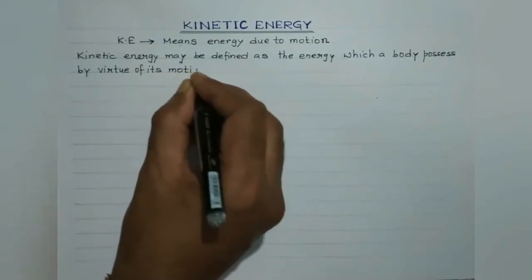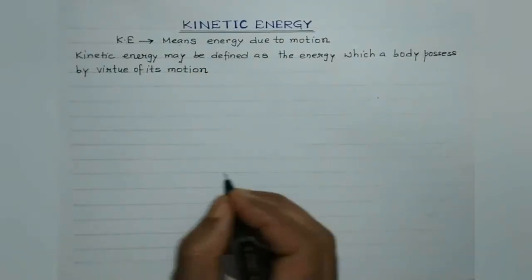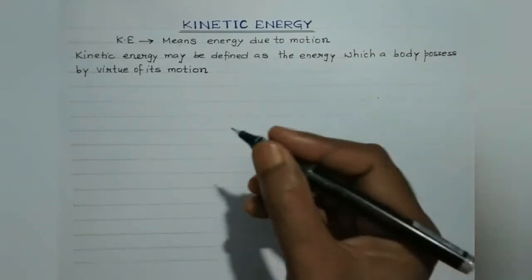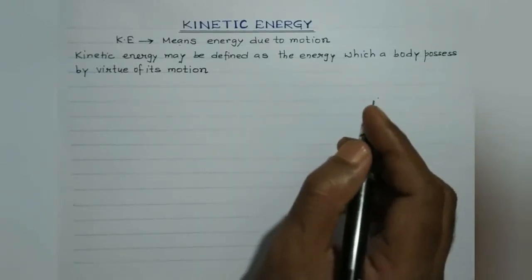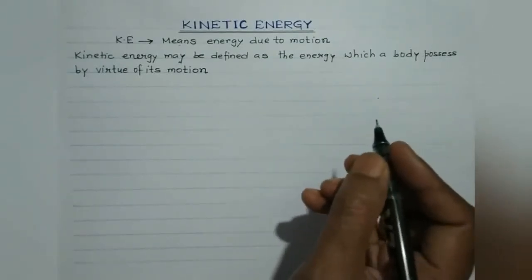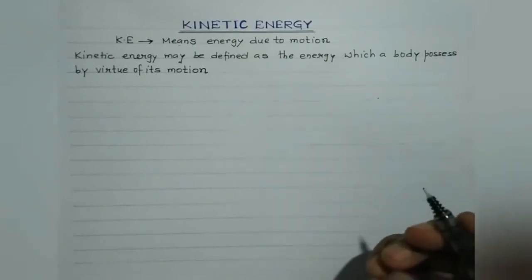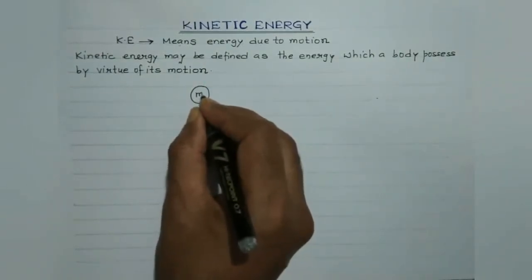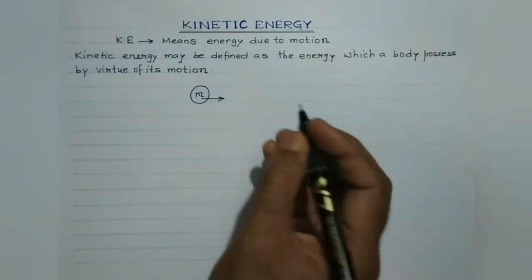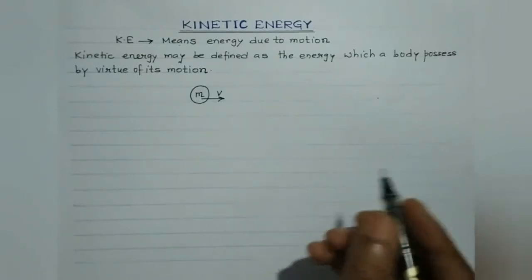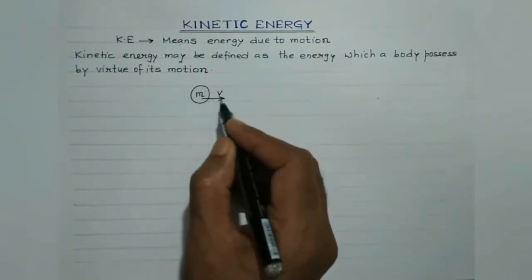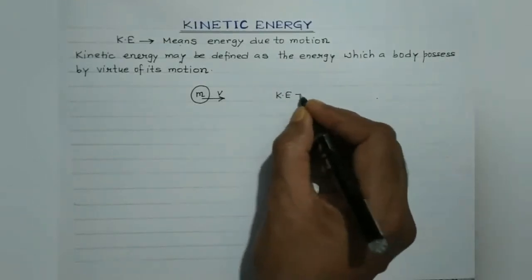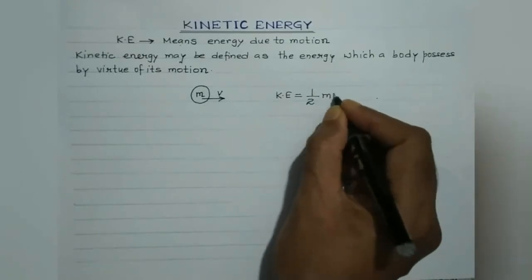A moving object will possess kinetic energy, and it is measured by the amount of work that the object can do against an opposing force before it comes to rest. The kinetic energy of an object moving with a certain velocity is equal to the work done on it to enable it to acquire that velocity. Consider a body of mass m moving with velocity v.